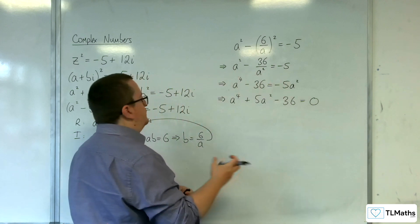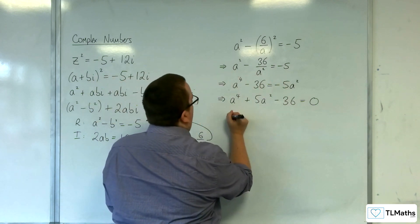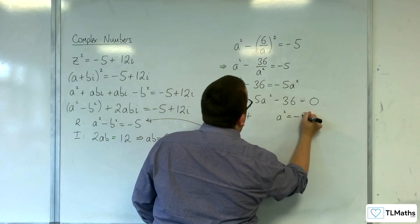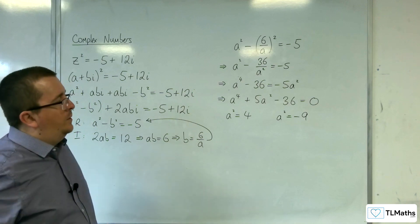So that means that a² is equal to 4, or a² is equal to -9.